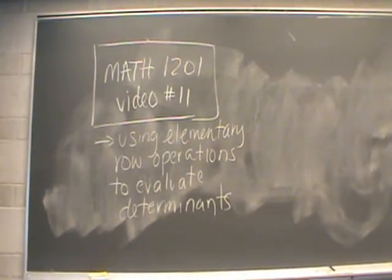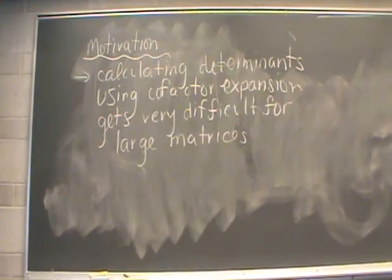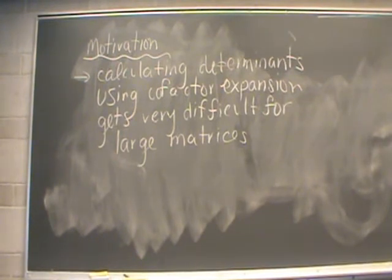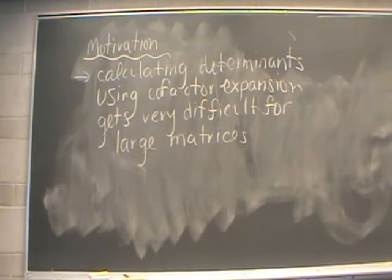This is MATH 1201 video number 11. Inside this video we're going to take a look at how to use elementary row operations to evaluate determinants. You've already seen that using the cofactor expansion method to calculate your determinant can get really messy, especially for a 4 by 4 matrix. So the real motivation for introducing this new method is to develop a way to calculate determinants for large matrices that's a bit more efficient.